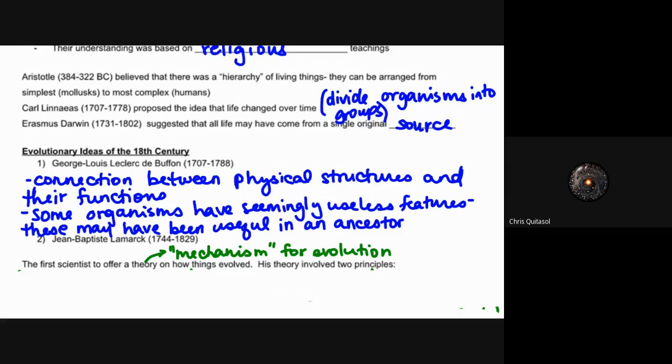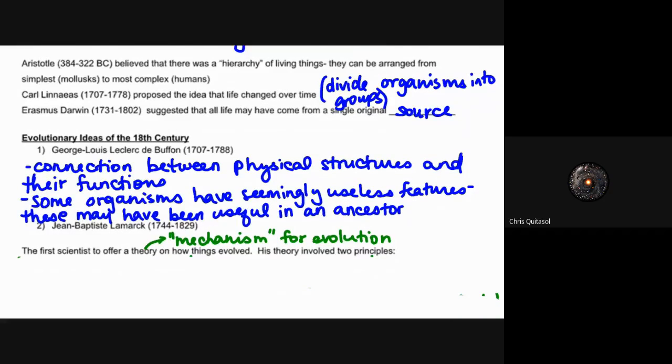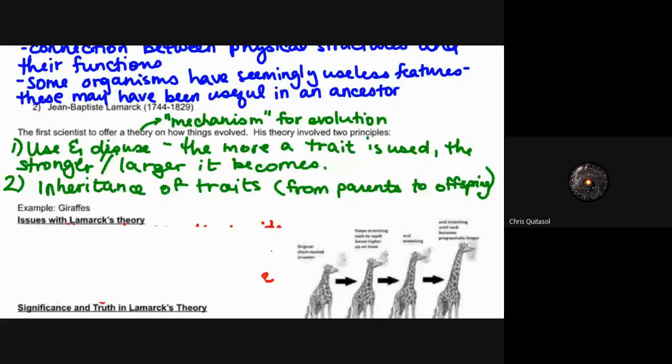Lamarck came up with the idea that there was a mechanism for evolution. His theory had two main ideas: if you use something it will become stronger or larger, and that these traits get passed on from parents to offspring. One of these ideas is a little bit wonky and not quite correct, but the second one specifically is a fantastic concept that he came up with in the mid to late 1700s - the idea that things are inherited.